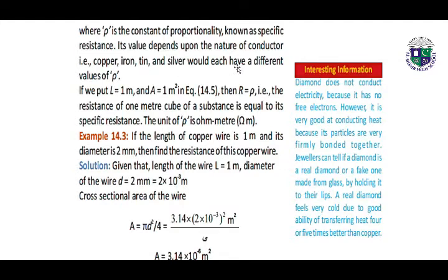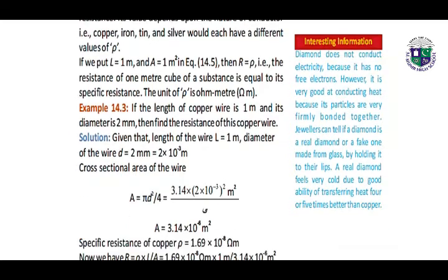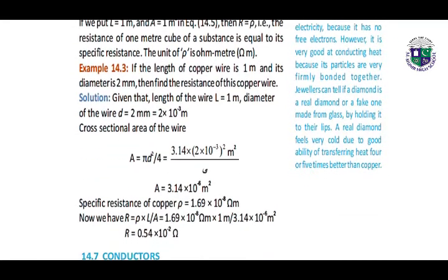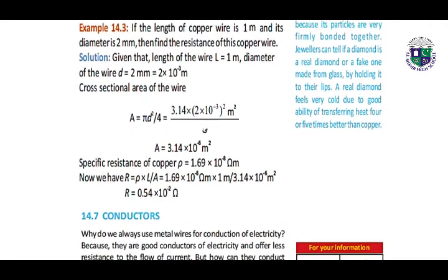If we put L equal to 1 meter and A equal to 1 meter square, then R equals ρ. The resistance of one meter cube of a substance is equal to its specific resistance. The unit of ρ is ohm-meter.